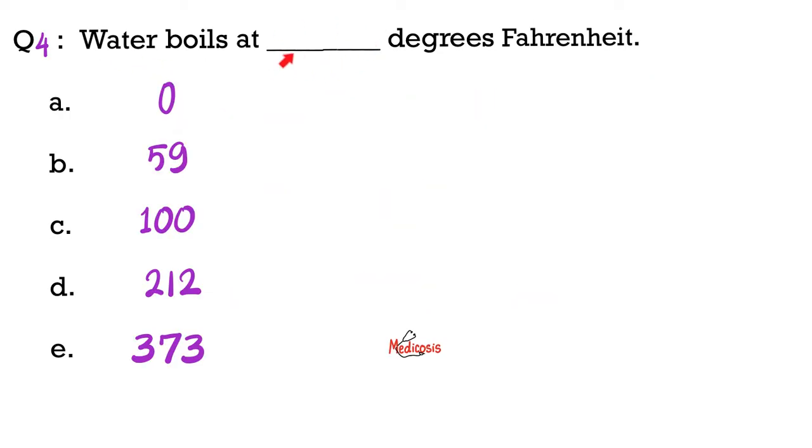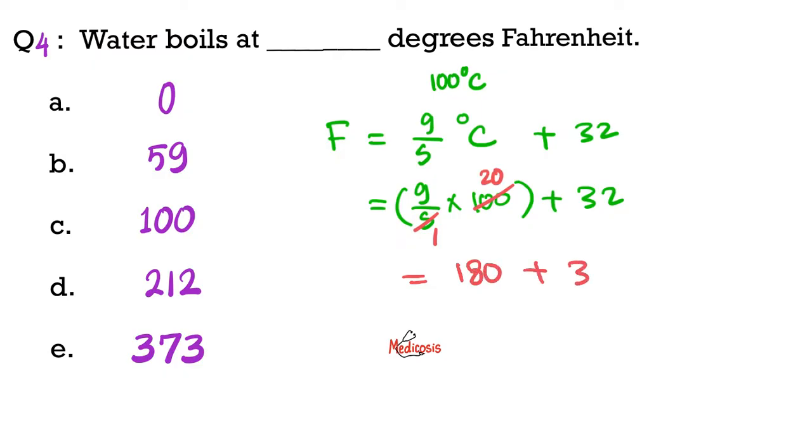Next, water boils at blank degrees Fahrenheit. Well, we know that water boils at 100 degrees Celsius. Let's convert this to Fahrenheit. Fahrenheit equals 9 over 5 multiplied by the temperature in Celsius plus 32, which will give me 9 over 5. Multiply this by 100, and then you add 32 to that. Let's divide by 5. This becomes 1. Divide by 5. This becomes 20. 20 times 9 is 180. Add to that 32, you get the final answer of 212 degrees Fahrenheit, which is choice D.